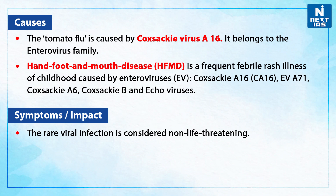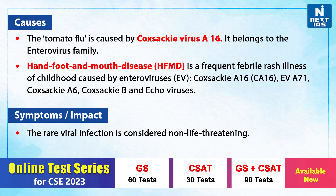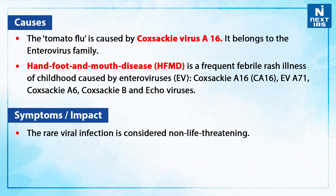Now let us discuss about the causes of tomato flu. It is caused by Coxsackie virus A16. Coxsackie virus A16 is one of the major pathogens associated with hand, foot and mouth disease in infants and younger children, and it belongs to the enterovirus family. Enterovirus is any of a group of RNA viruses which typically occur in the gastrointestinal tract, sometimes spreading to the central nervous system or other parts of the body. Hand, foot and mouth disease is a frequent febrile rash illness of childhood caused by enterovirus — Coxsackie A16, EVA71, Coxsackie A6, Coxsackie B, and the echovirus. Echovirus is also one of several families of viruses that affect the gastrointestinal tract.